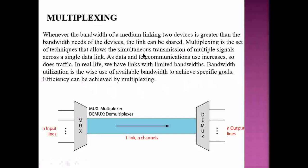Multiplexing is a set of techniques that allows the simultaneous transmission of multiple signals across a data link. As data communication use increases, so does the traffic. We have links with limited bandwidth, so bandwidth utilization is the wise use of valuable bandwidth to achieve specific goals. Efficiency — the ability to use less resources to produce more — can be achieved through multiplexing.